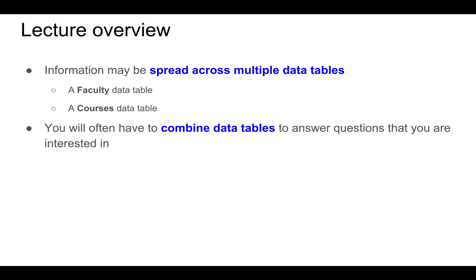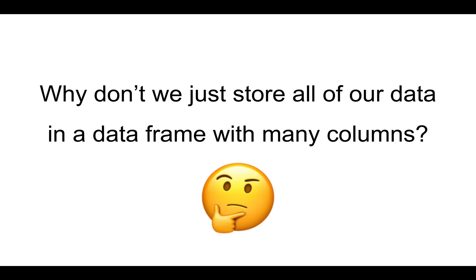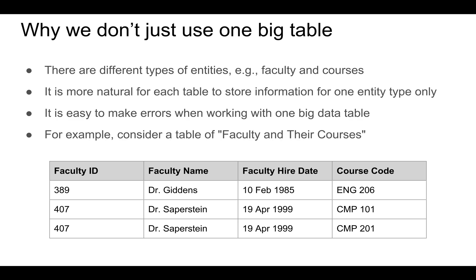We'll be talking about these two topics. The first is that information can be spread across multiple data tables and you often have to combine data tables to answer questions that you are interested in. So first, why don't we just store all of our data in a single data frame with many columns? It's more natural for each table to store information for one entity type, and in the next few slides we'll see how it's easy to make errors when you work with one huge data table.